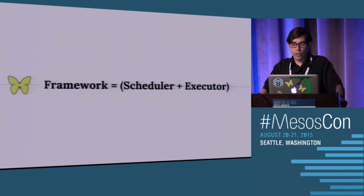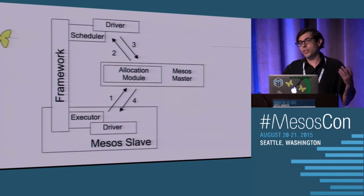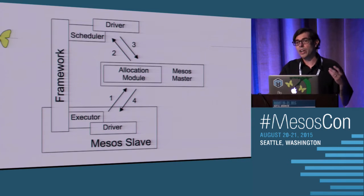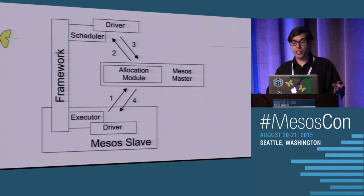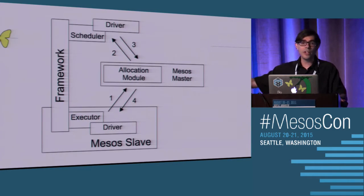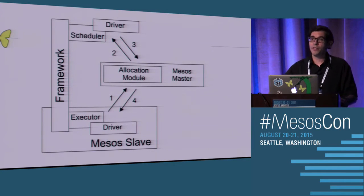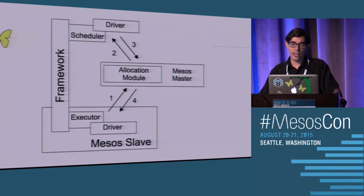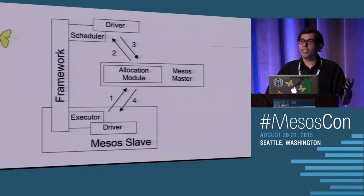So let's talk about frameworks. A framework is basically a scheduler and an executor. The scheduler has a driver that allows it to talk to Mesos. The scheduler is responsible for launching applications, killing applications, communicating with the executor, and running the actual tasks on the Mesos slave. The executor is the process that's essentially able to launch tasks on the slave. The flow is the slave will send offers to the Mesos master, which sends them to the allocation module, which sends them to the scheduler. The scheduler decides whether it wants the resource or not. If the scheduler doesn't want the resource, you need to decline it - otherwise you're going to hold on to all the offers and there'll be no offers on your cluster.